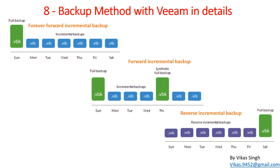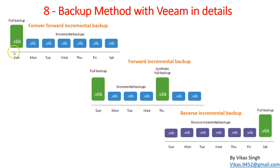There are mainly three types of backup. The first type is forever forward incremental backup. This means the first backup in a queue is always going to be a full backup. So if we set the restoration point to six for five backups, then the first backup will be the full backup and the rest will be incremental backups.